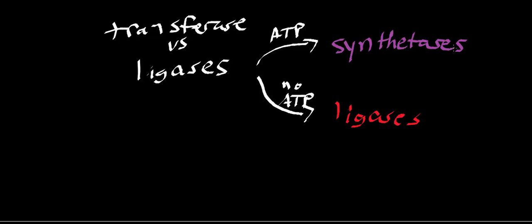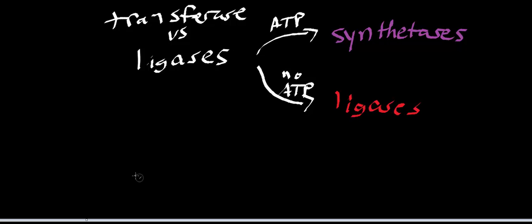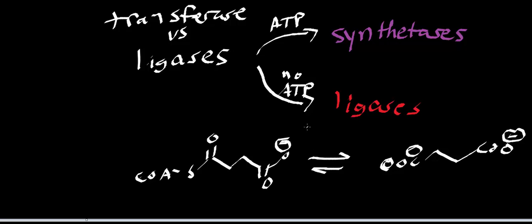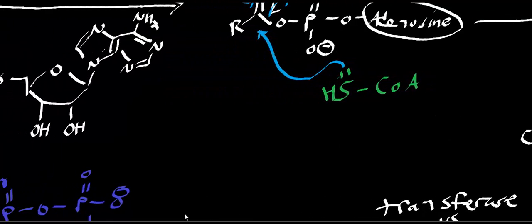You've already seen a synthetase — that was succinyl coenzyme A synthetase, going from GDP to GTP. It may not make a lot of sense because the reaction is named for the reverse direction, and I already mentioned in the TCA cycle video that it's a bit confusing since under physiological conditions this reaction never reverses. But the point is: ligases that use ATP are called synthetases.